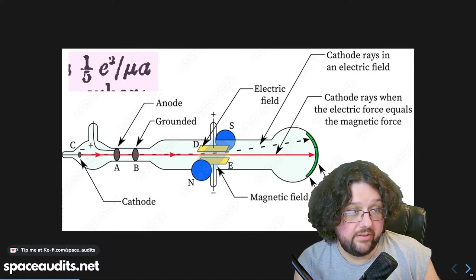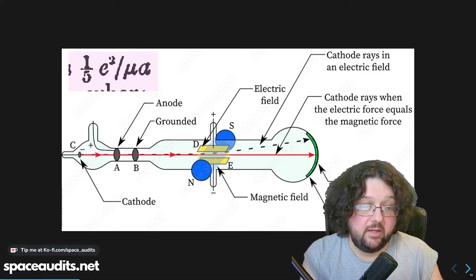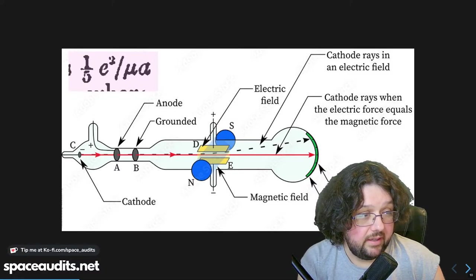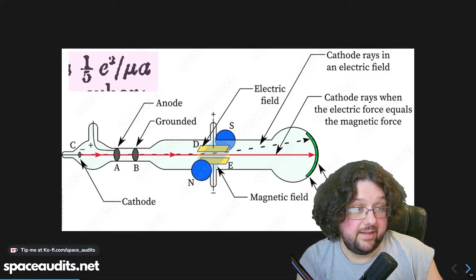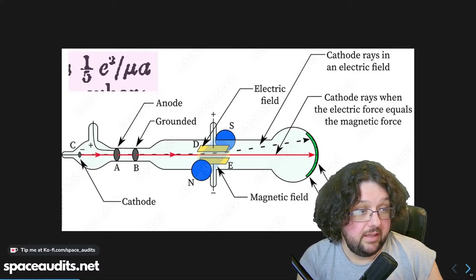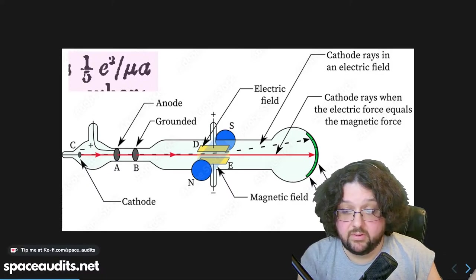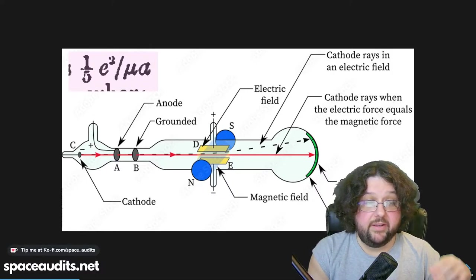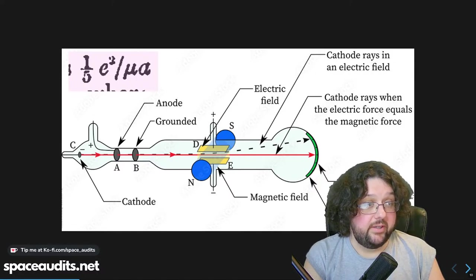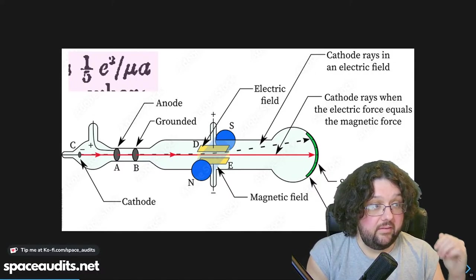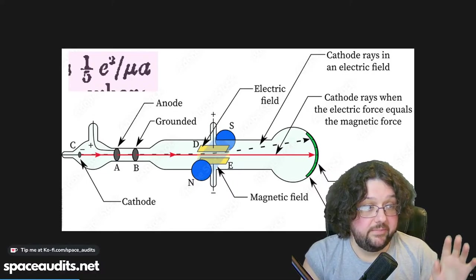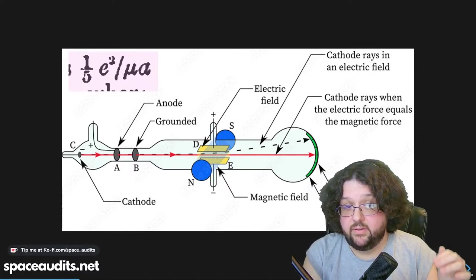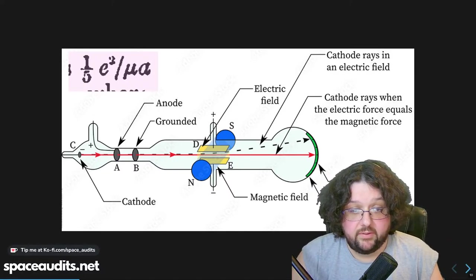They got their baseline for where the beam lines up, then introduced a magnetic field — north or south pole — and an electric field, getting deviations in beam position. From this they determined that the energy they'd call the electron is responsible for electricity and is a negatively charged particle, based on how it responded to electric and magnetic fields.